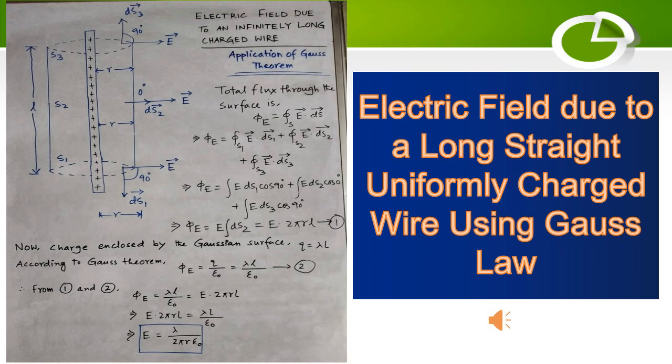To calculate the electric field at a distance r from the line charge, we have to choose a cylindrical Gaussian surface of radius r and length l, with its axis along the line charge.